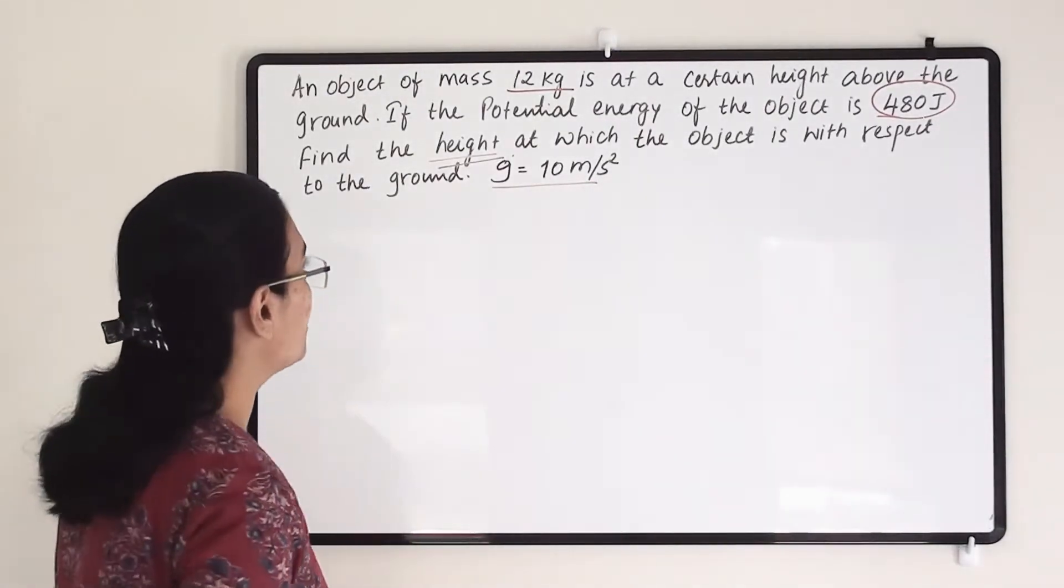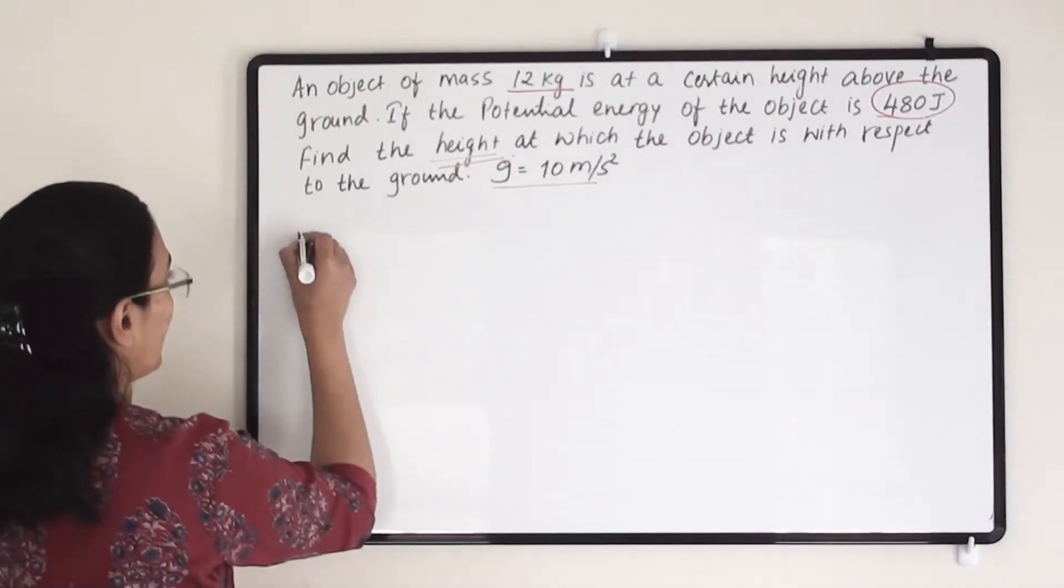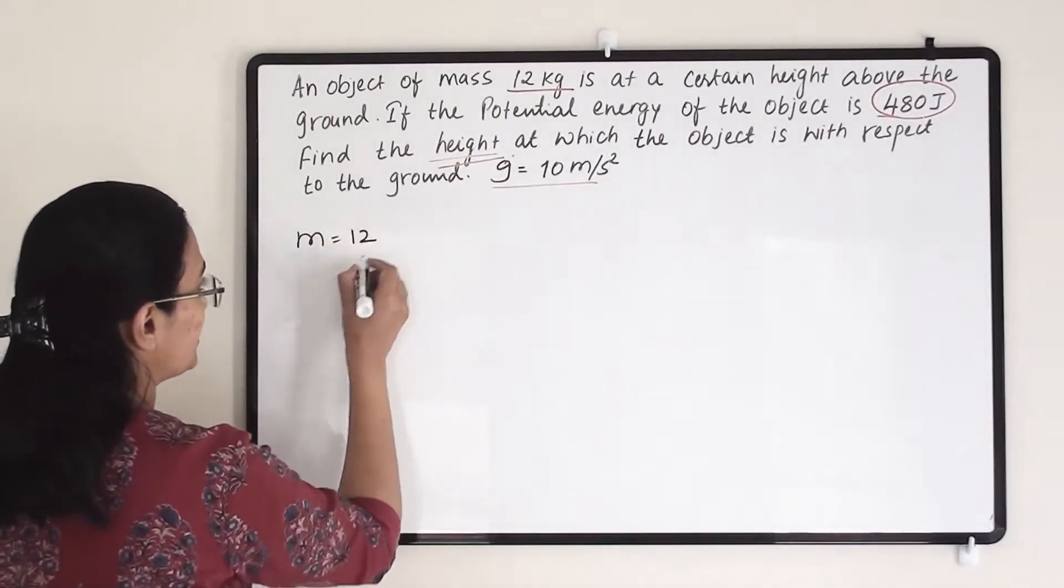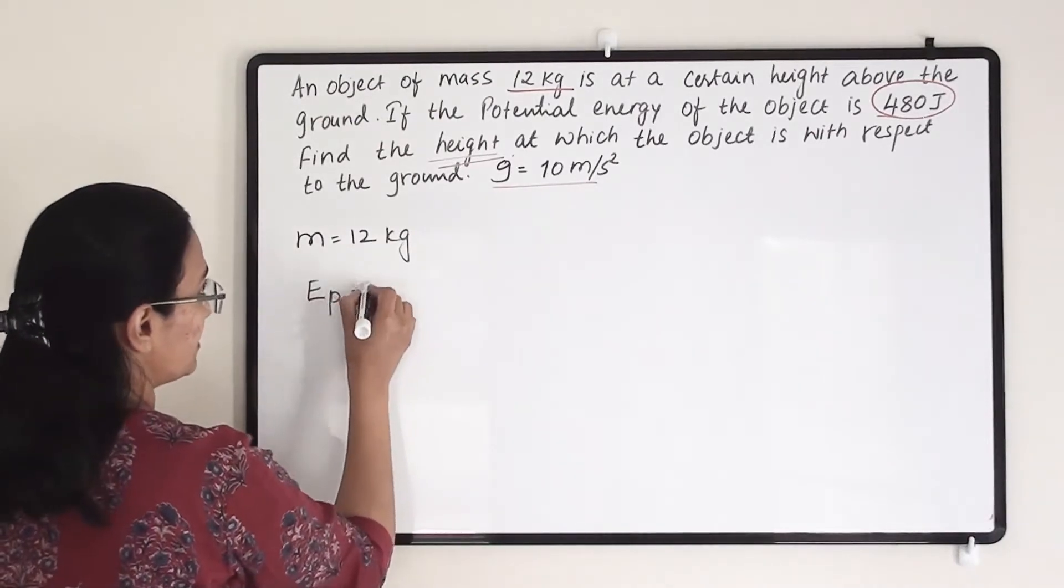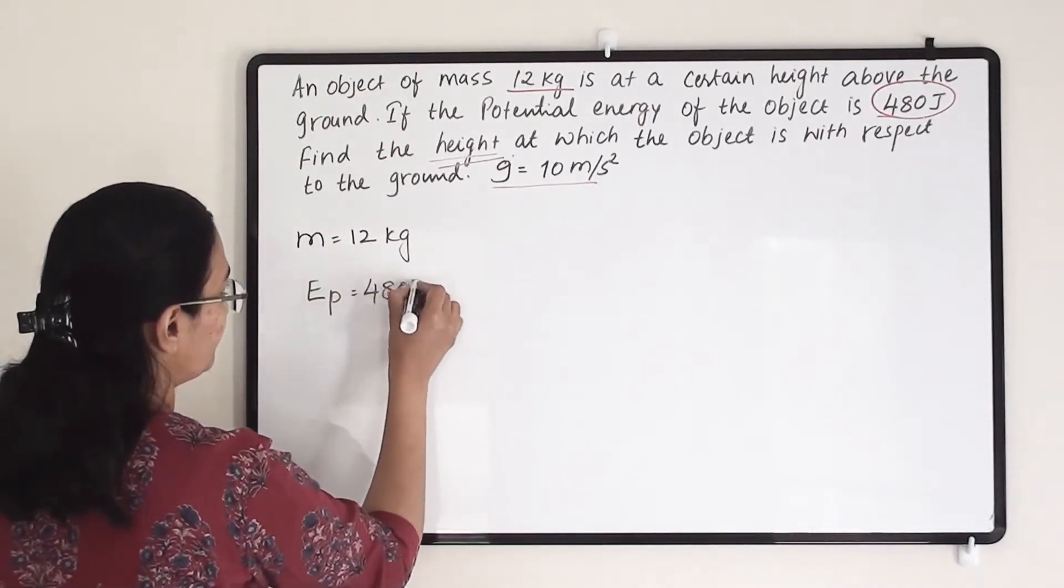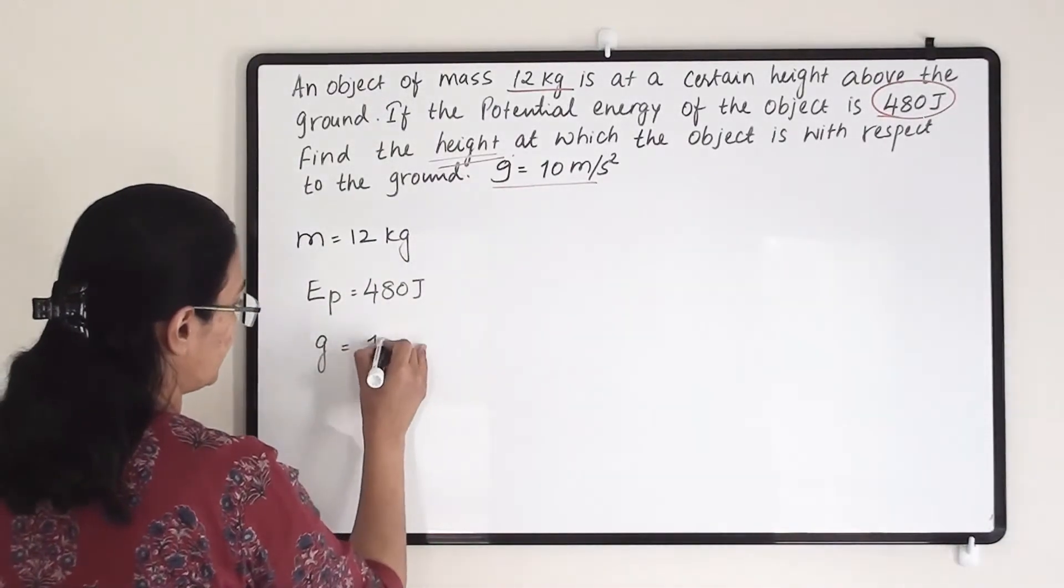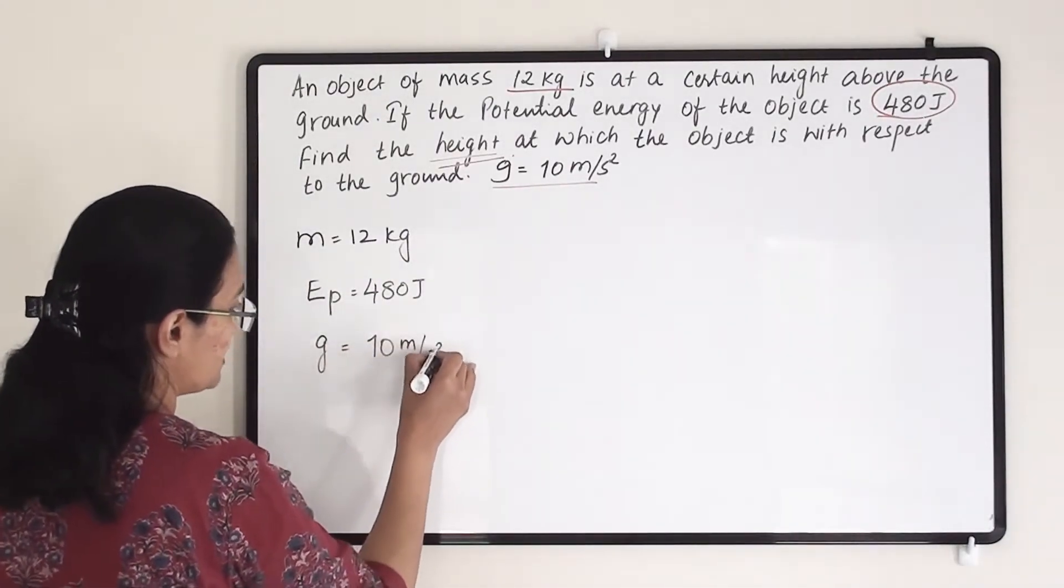So let us note down the details given to us. M equals to 12 kg. Potential energy is 480 joule. And G we need to take is 10 meter per second square.